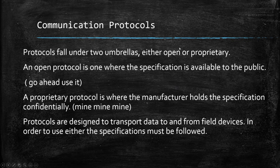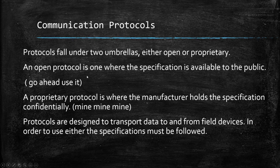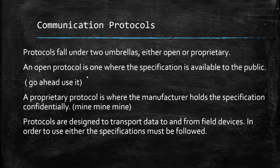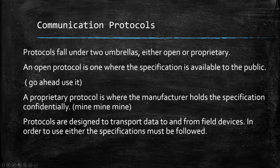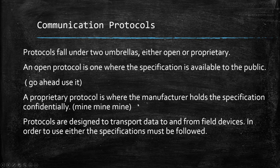Protocols are going to fall under two umbrellas: either open protocol or proprietary protocol. An open protocol is one where the specification is available to the public to use for free. In the computer world, an open protocol is something like Linux or Open Office — free office-type software. Proprietary protocols are where the manufacturer holds the specification confidentially. Microsoft Office is owned by Bill Gates — if you want to use it, you've got to pay for it. That's the general difference: one somebody owns and you have to pay for, the other is free to use.